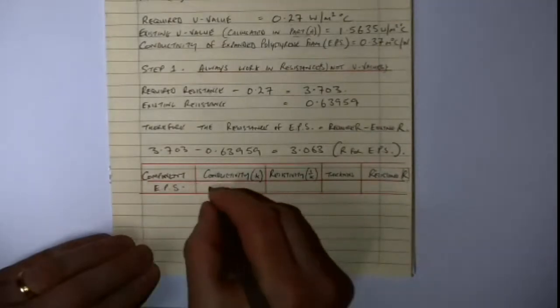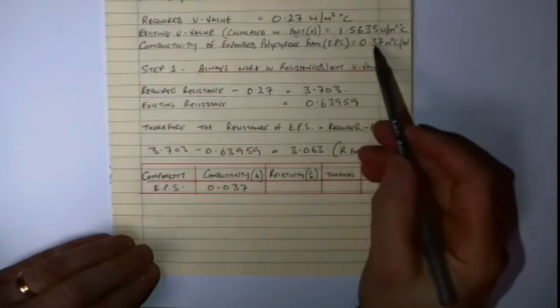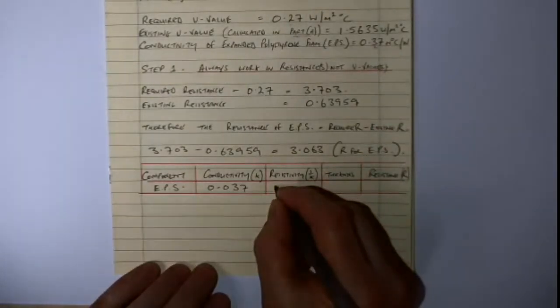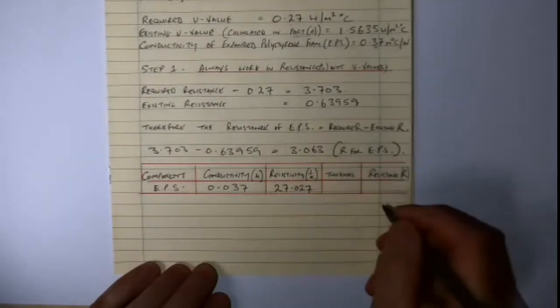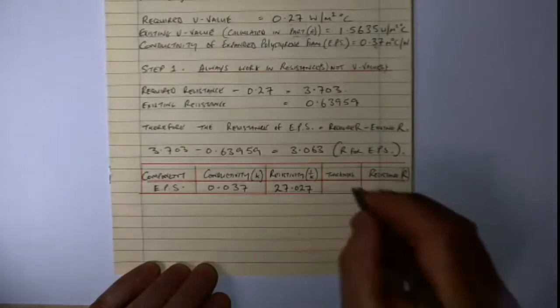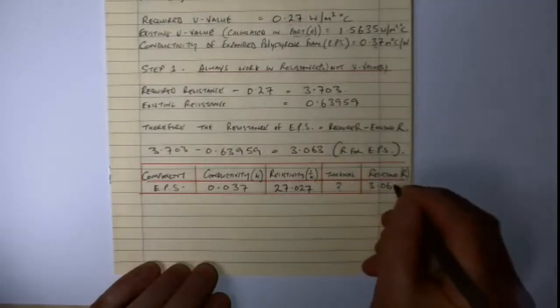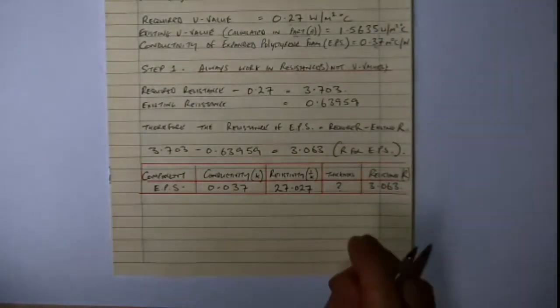In the question, we're given the conductivity, but if we want to use the resistivity, all we've got to do is divide 1 by 0.037, and that gives us 27.027. The thickness we don't know, and the resistance we have worked out from subtracting the two R's, which is 3.063.